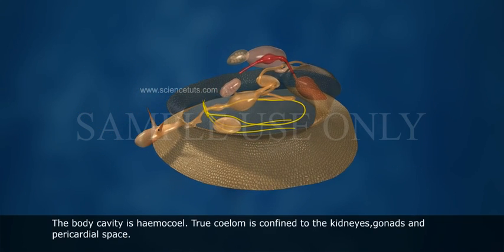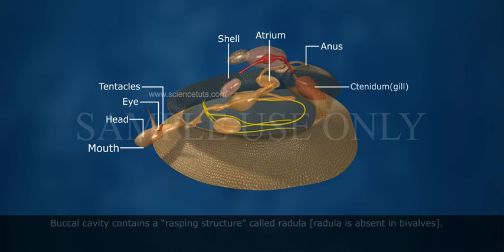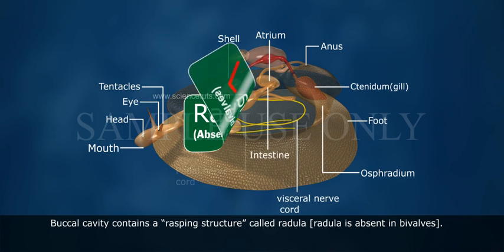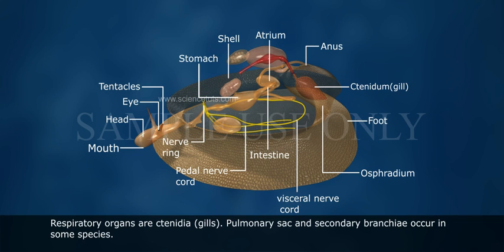The body cavity is a hemocoel. The true coelom is confined to the kidneys, gonads, and pericardial space. The buccal cavity contains a rasping structure called the radula, which is absent in bivalves. Respiratory organs are ctenidia gills; pulmonary sac and secondary branchia occur in some species.